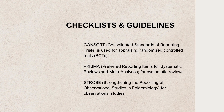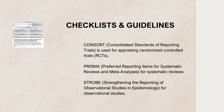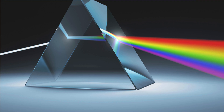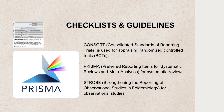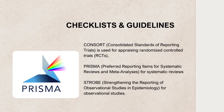For example, there is one checklist — CONSORT — which refers to Consolidated Standards of Reporting Trials, and it is mainly meant to appraise randomized controlled trials. Another system called PRISMA refers to the Preferred Reporting Items for Systematic Reviews and Meta-Analysis, so it is clearly meant to evaluate systematic reviews and meta-analyses.